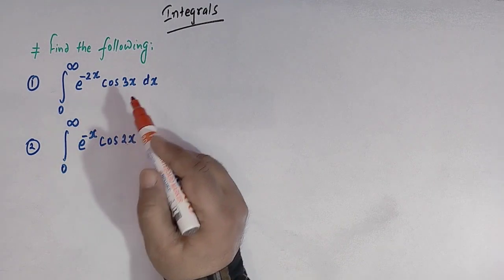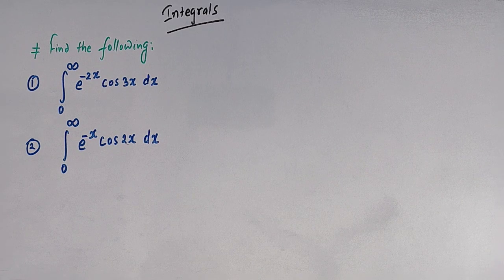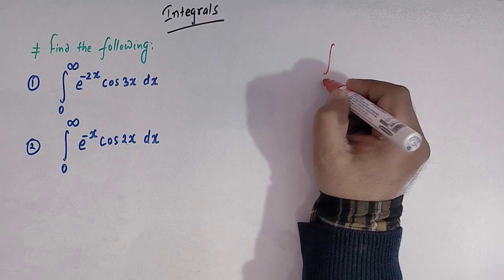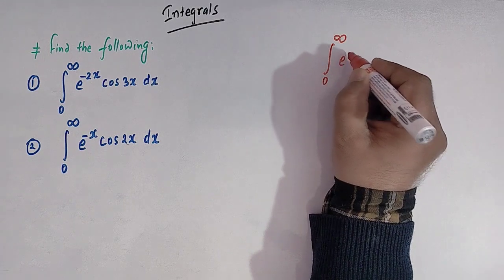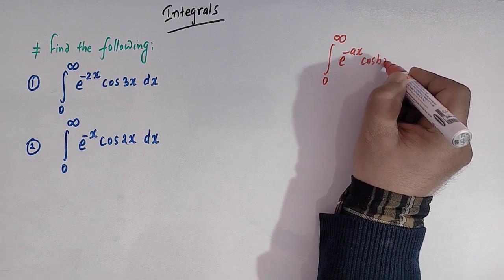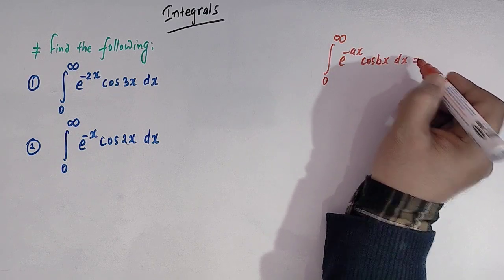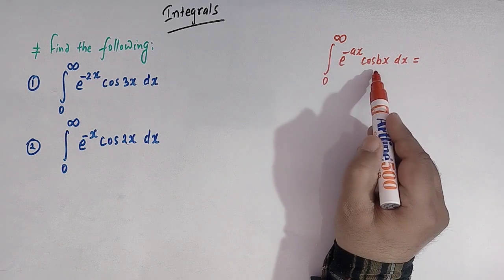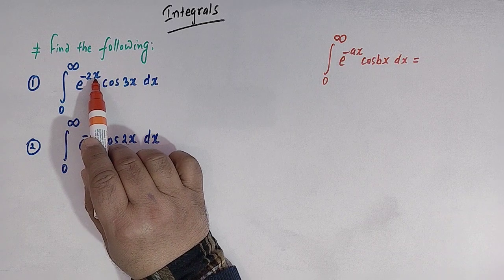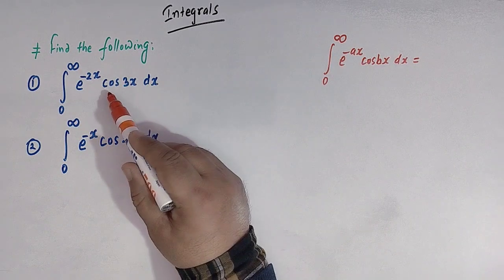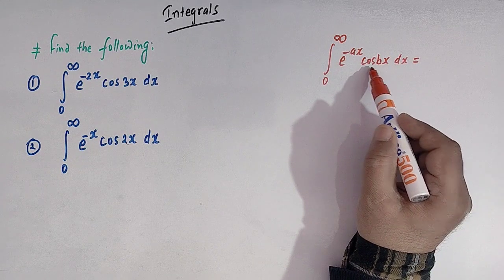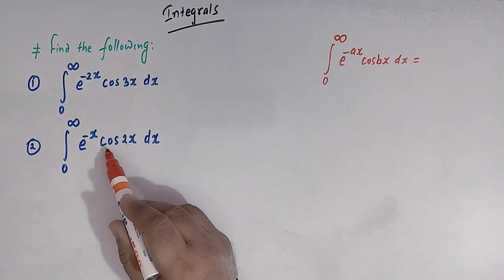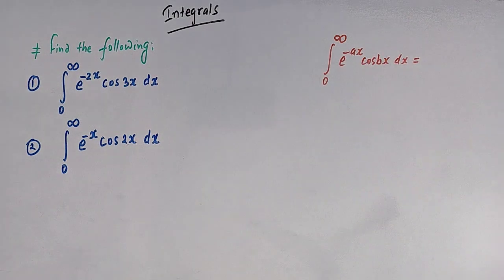In order to find out the values of these two integrals, let us consider the general integral of these two types. If we consider the integral from zero to infinity of e raised to minus ax times cosine of bx dx, then we can see that both specific integrals are similar to this general form. The first has e raised to minus 2x and cosine of 3x, and the second has e raised to minus x and cosine of 2x.